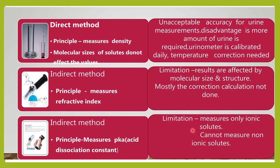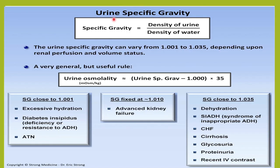But the limitation of the reagent strip is that it will only measure the ionic solutes — it cannot measure the non-ionic solutes. That is all about urine specific gravity. It is a very important tool which helps us identify a lot of conditions, especially the kidney's concentrating capacity and the kidney's diluting capacity, which we can determine by measuring the urine specific gravity.